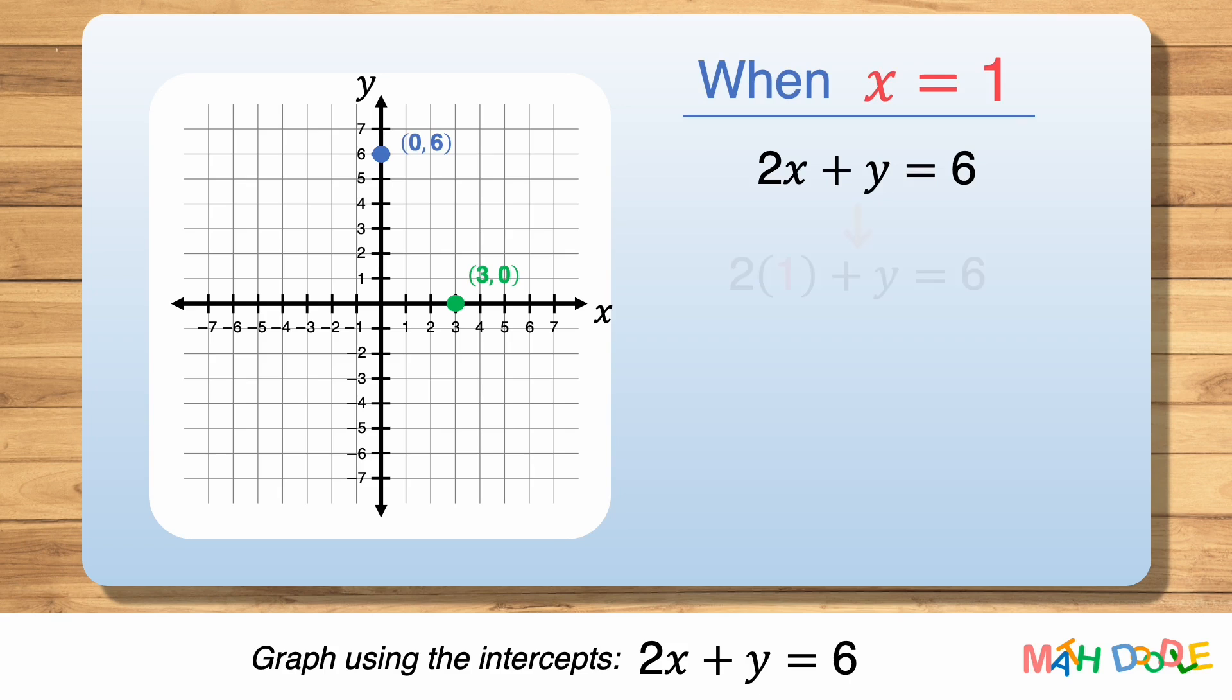We substitute 1 for x. 2 times 1 is 2. After subtracting 2 from both sides, we have y equals 4. So when x is 1, y is 4. This tells us that the line passes through the point (1, 4).